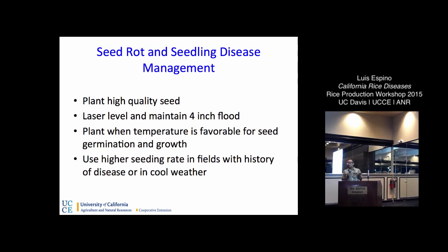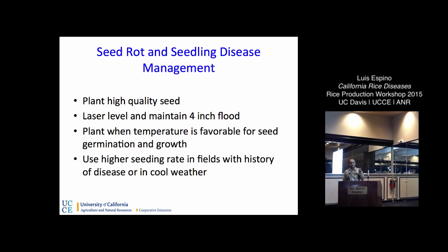It's also very important to plant at the adequate timing. A lot of growers like to plant as early as possible to avoid rain during harvest time, but if it's too early you can have cool periods that won't allow seeds to establish quickly, increasing the risk of seedling disease or seed rot. If you have a field with a history of high incidence of this disease, you can increase your seeding rate to compensate — but with the caveat that increasing seeding rate can have detrimental effects and can affect other diseases as we'll see later on.